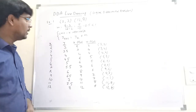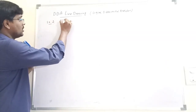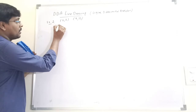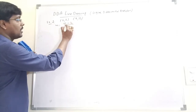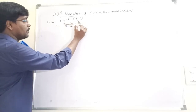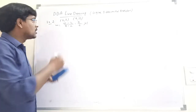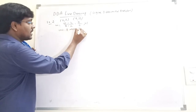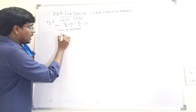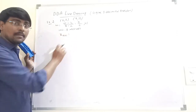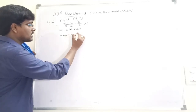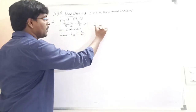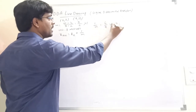This is the procedure to calculate the DDA Line Drawing Algorithm for slope less than 1. Now consider Example 2 for slope greater than 1. Take the points (2, 2) and (8, 10). First calculate slope m = (10-2)/(8-2) = 8/6. The slope value is greater than 1, so we use unit y intervals.